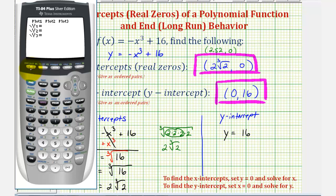Now let's press y equals, enter the function. So we have negative x raised to the third power plus 16. Now from here, if we press zoom six for the standard window, we will see the x-intercept, but we won't see the y-intercept, because for the standard window, the y-maximum is only 10. So from here, let's press the window key.